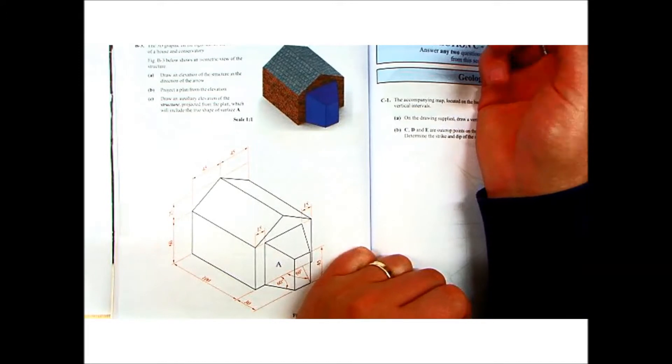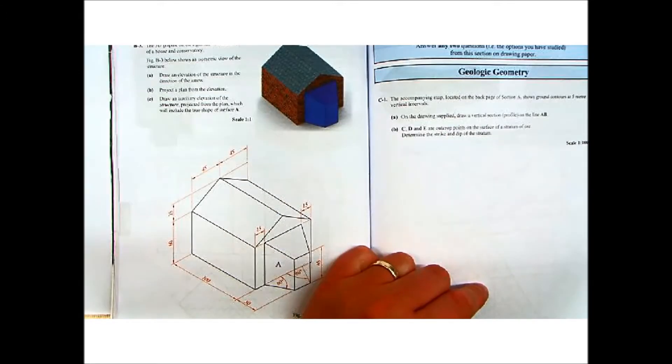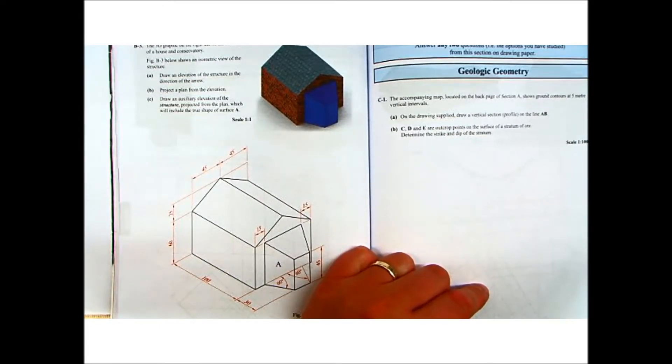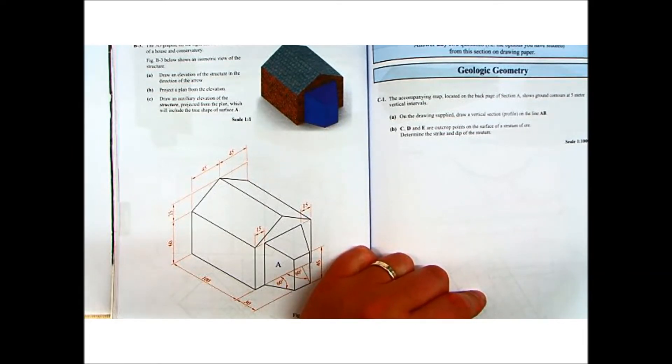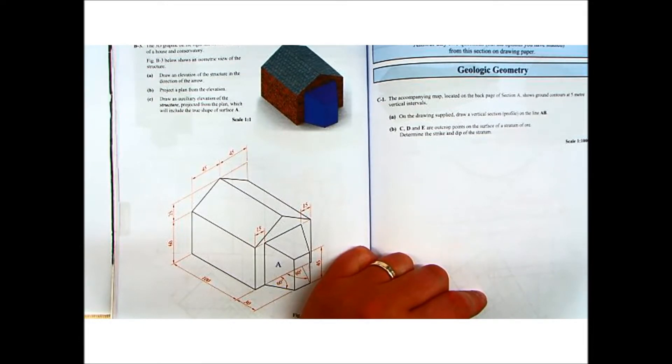We always read the question first and see what it has to give us. The 3D graphic on the right shows the outline of a house and conservatory. Figure B3 below shows an isometric view of the structure. Part A: draw an elevation of the structure in the direction of the arrow. Part B: project a plan of the elevation. And Part C: draw an auxiliary elevation of the structure projected from the plan which will include the true shape of surface A.